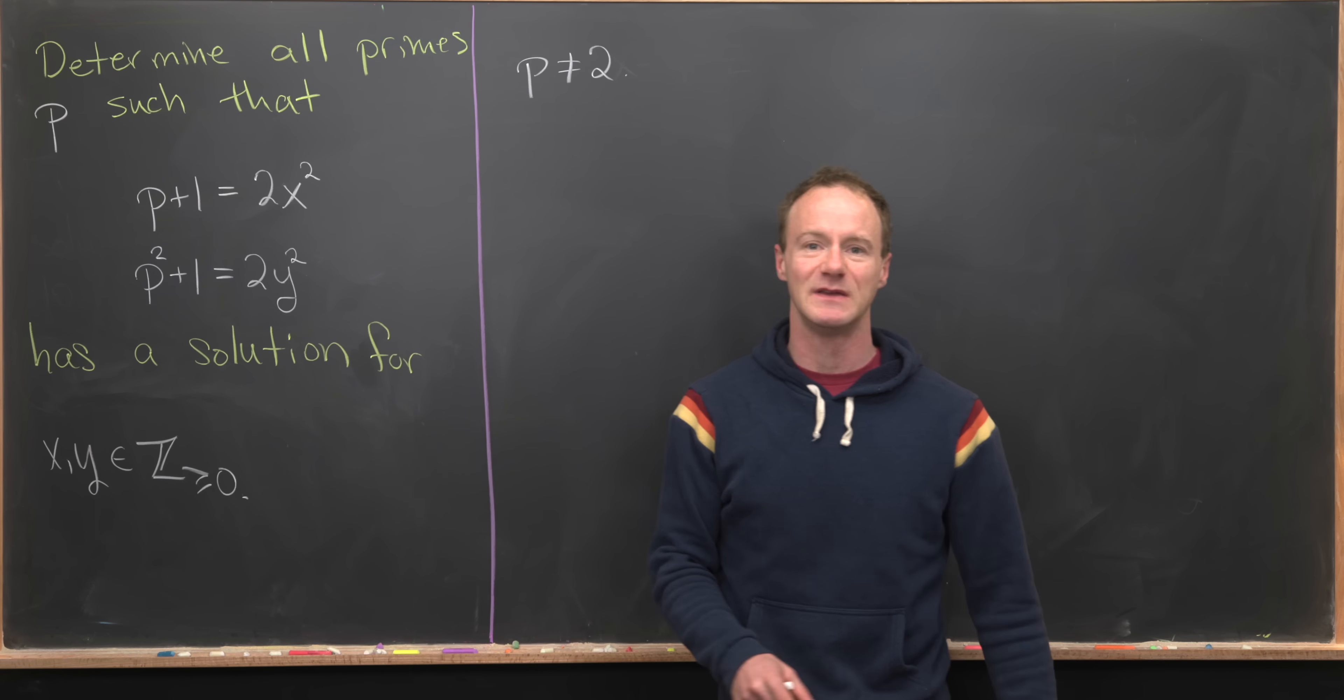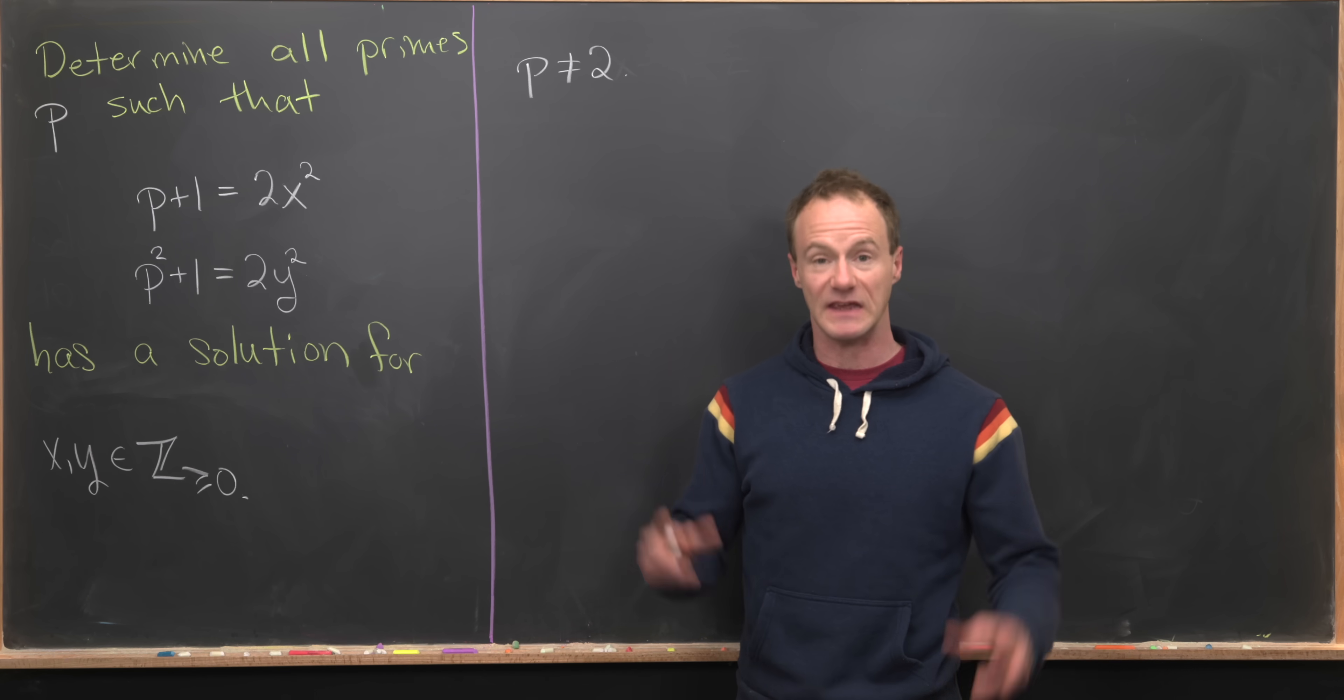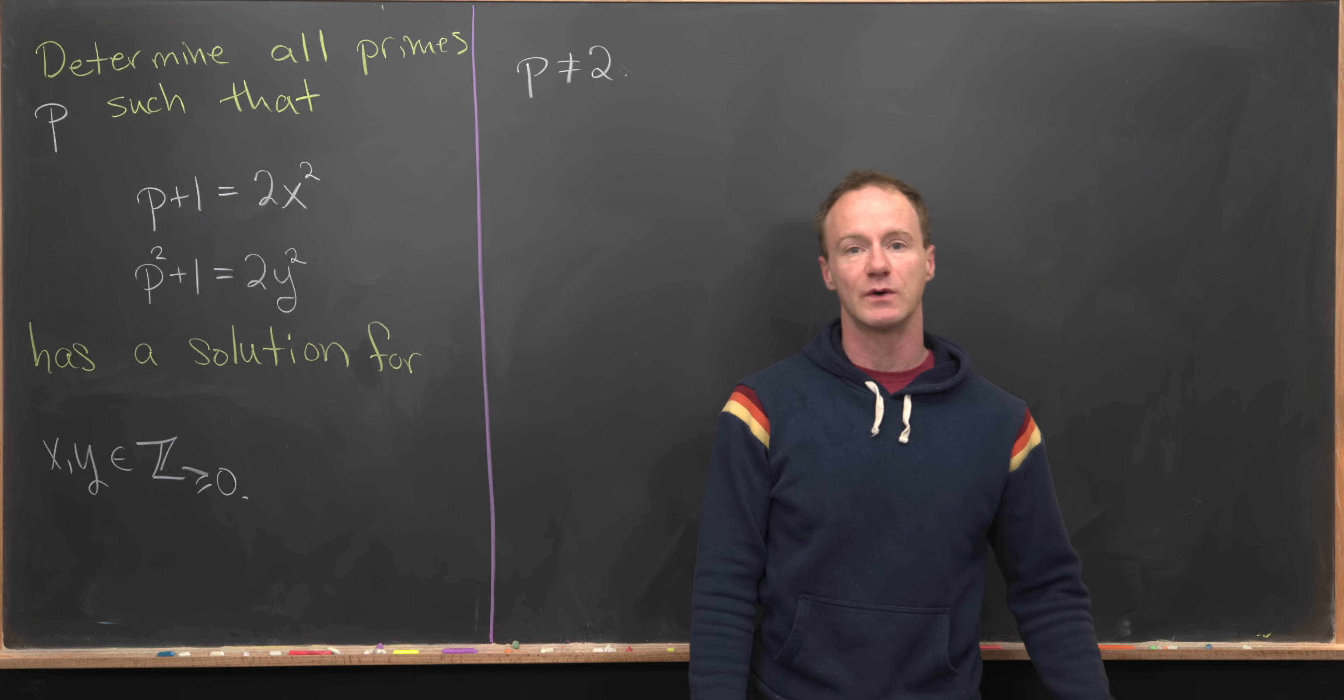But if p+1 is even, that means p is odd. So p is not the even prime number 2. In other words, it must be one of the odd prime numbers.